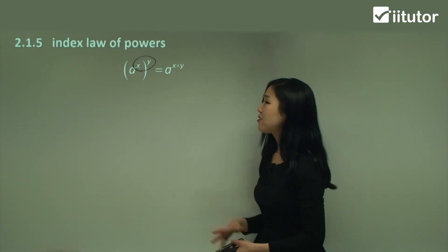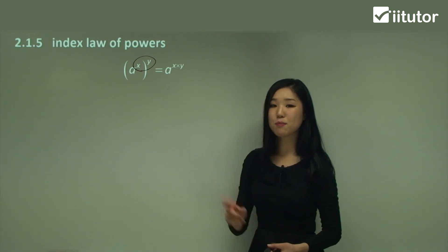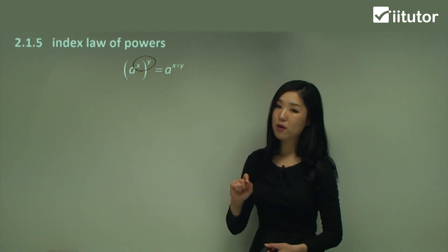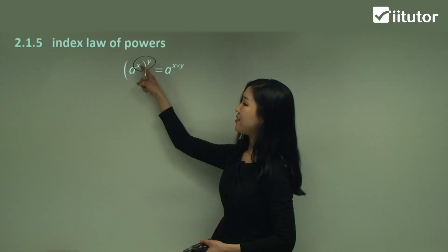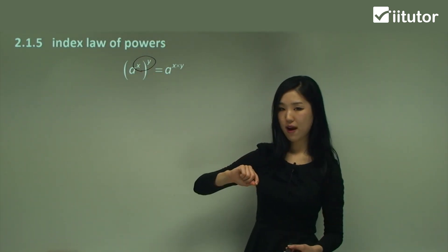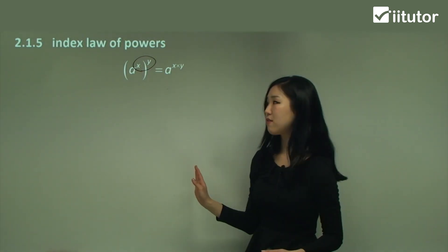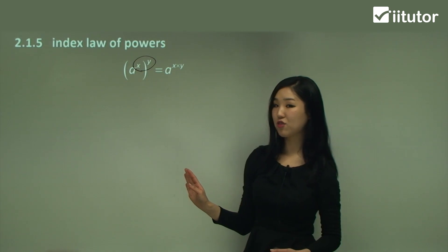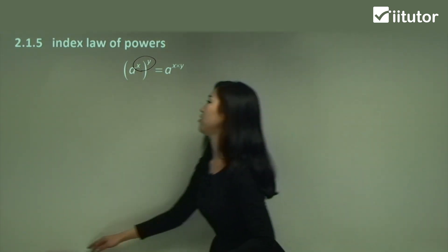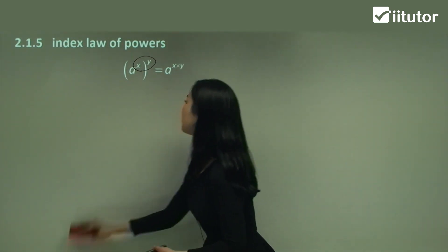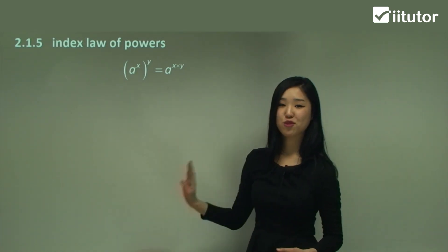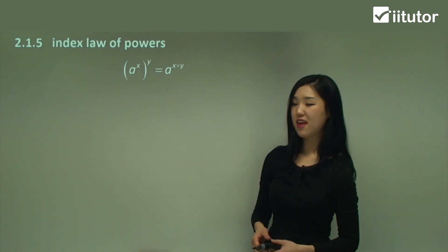The index law of powers simply means you can multiply the powers together — that's outside the brackets and inside the brackets. That's all you need to remember in this section. It's pretty easy. So try to write this down somewhere and we're going to use this in the next questions.